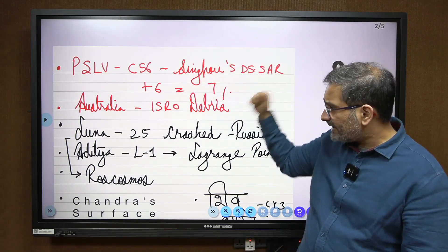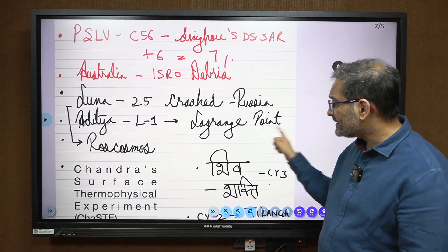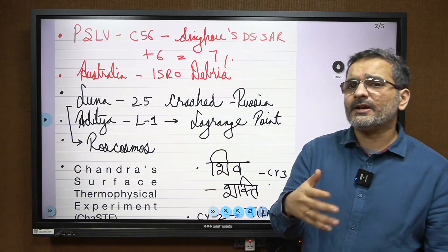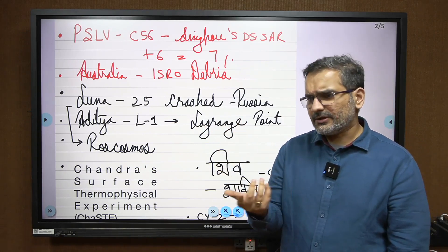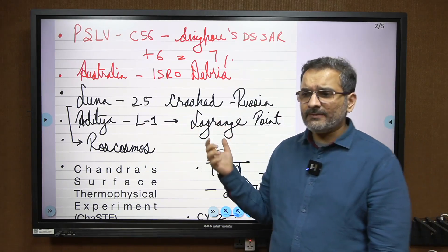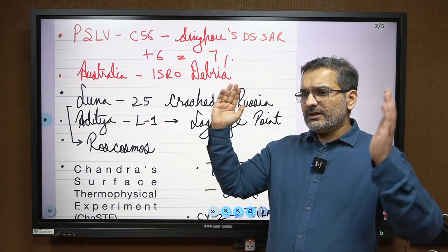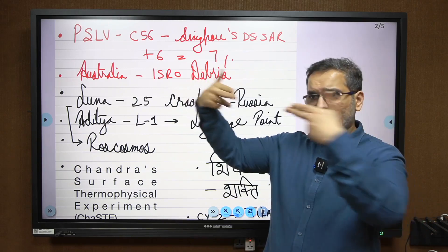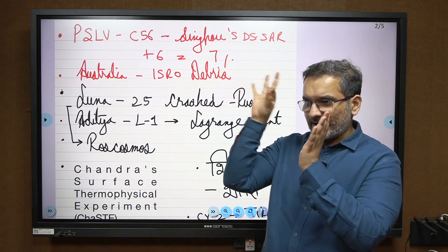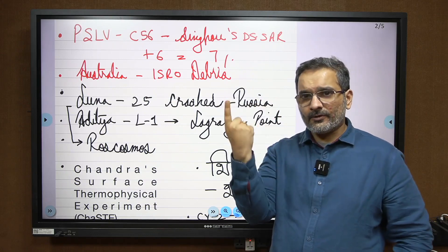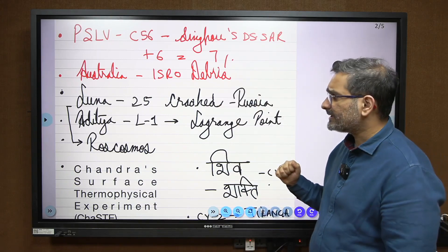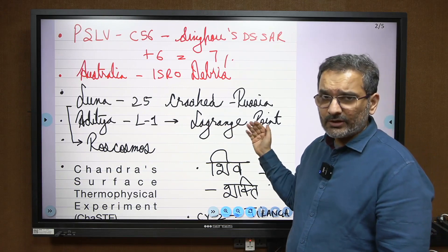We also launched Aditya-L1. The L stands for Lagrange point. It is sometimes pronounced as Lagrange because the name is French. The Lagrange point is where the gravity of two bodies — for example Earth and Sun — cancel each other out. The satellite gets effectively stationary at that point as seen from Earth. You need to understand what exactly L stands for.